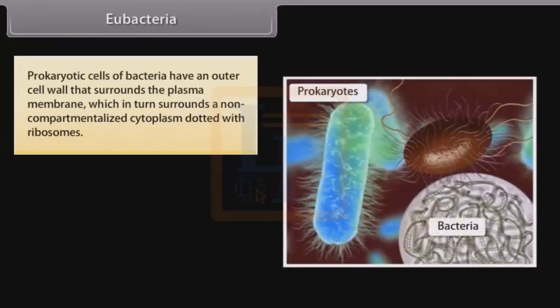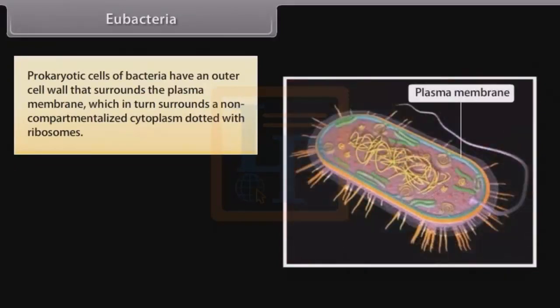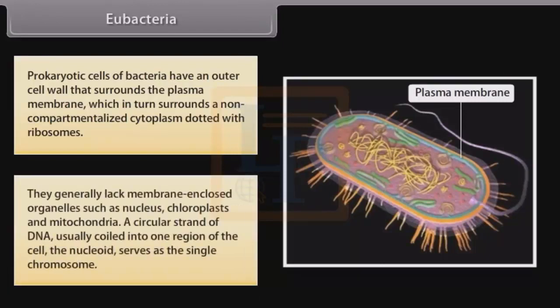Prokaryotic cells of bacteria have an outer cell wall that surrounds the plasma membrane, which in turn surrounds a non-compartmentalized cytoplasm dotted with ribosomes. They generally lack membrane-enclosed organelles such as nucleus, chloroplasts, and mitochondria. A circular strand of DNA, usually coiled into one region of the cell called the nucleoid, serves as the single chromosome.